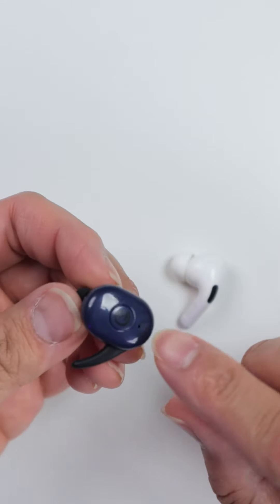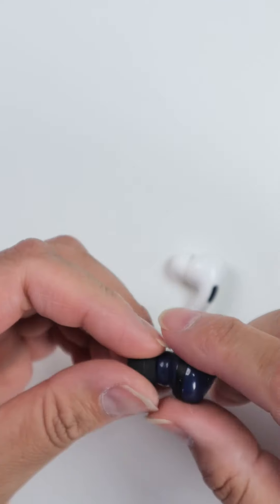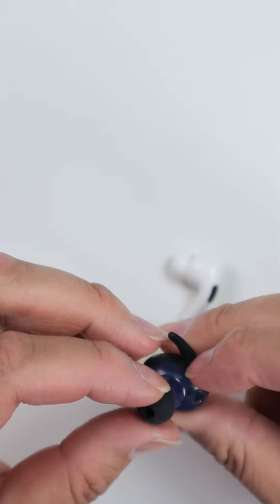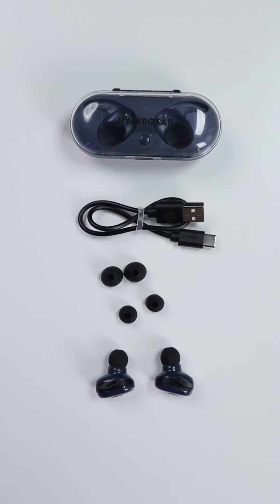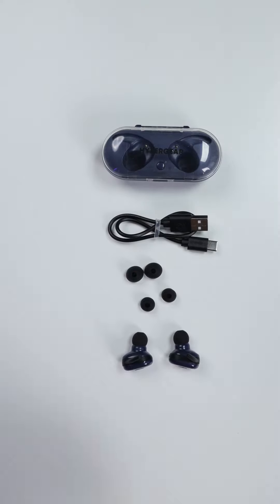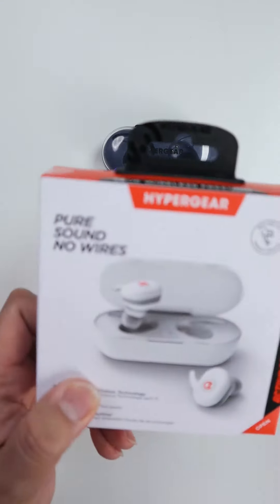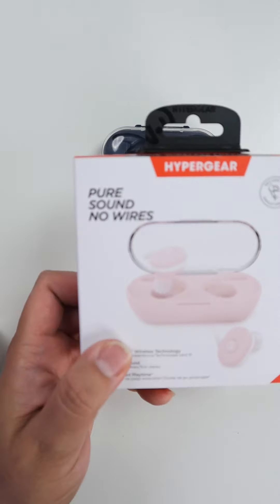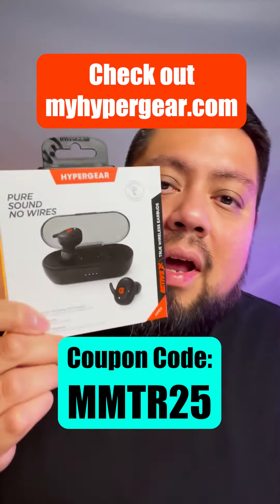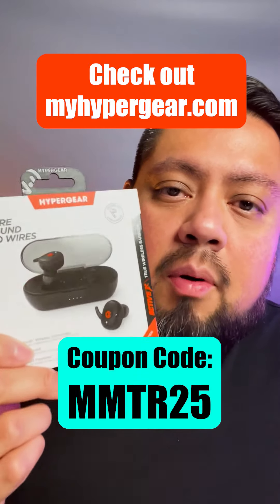Kind of look like the Raycons. Here's the USB-C cable. Cool thing about these is that they do come with extra ear gels. It comes with two sets - these are the large ones and these are the small ones. I assume the medium ones are already on here. Yeah, these are the medium ones.